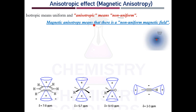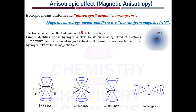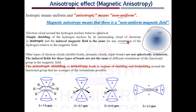So far we have studied about shielding and deshielding, where for a simple hydrogen nucleus there is an electron cloud surrounding it. This electron cloud appears quite spherical, and this spherical electron cloud induces a magnetic field which is uniform in all directions for any orientation of the hydrogen nucleus. But depending upon the molecule, the field felt by the nucleus will be different.